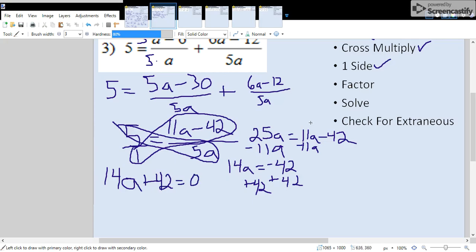Step five, we're going to factor out everything we can. It looks like 14 goes into both of those numbers. So if we factor out 14, what we have left over inside is a plus 3 equals 0. So now we're done with that.